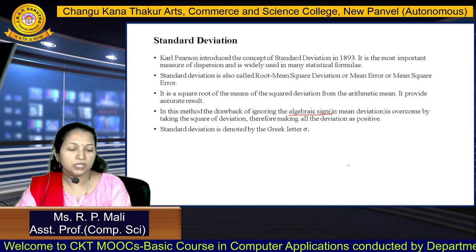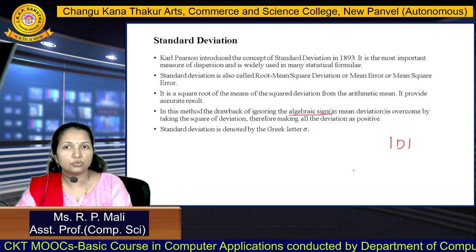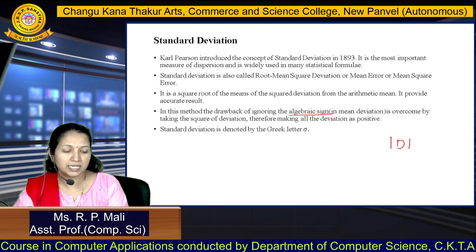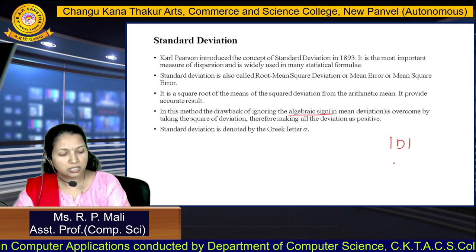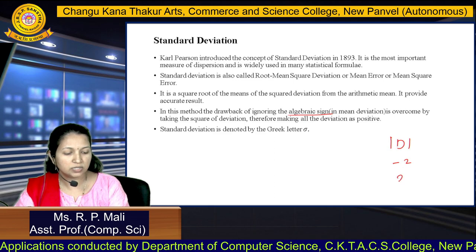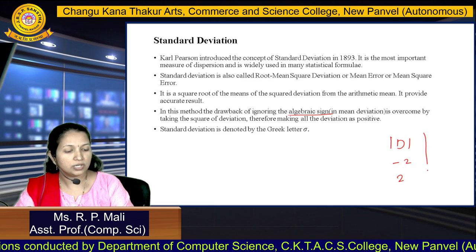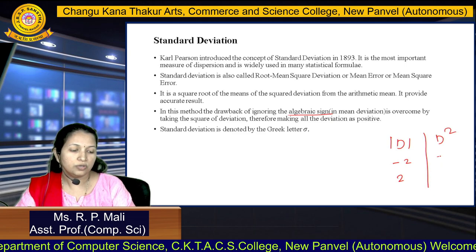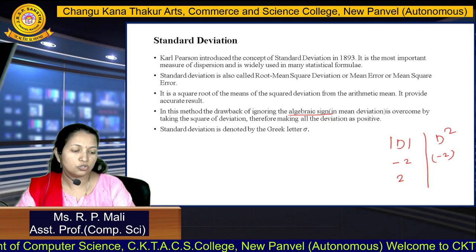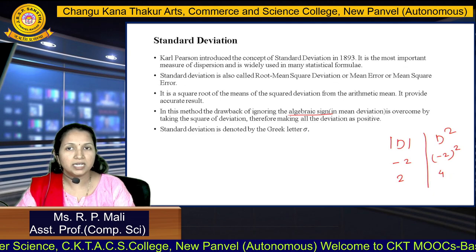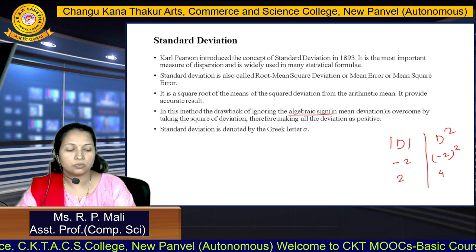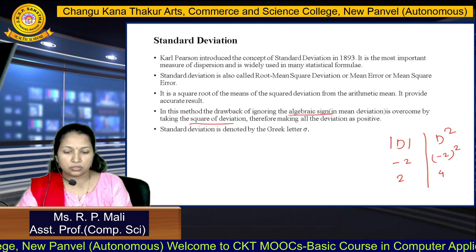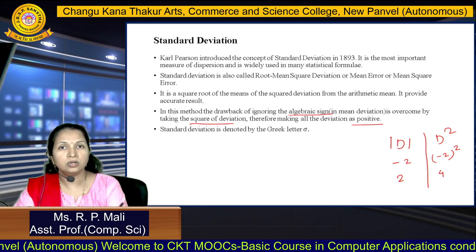In mean deviation, we use the modulus to ignore the sign. In standard deviation, we square the deviation instead. For example, if the deviation is minus 2, in mean deviation we consider it as 2, but in standard deviation we square it — minus 2 squared equals positive 4. So squaring the deviation makes all values positive.